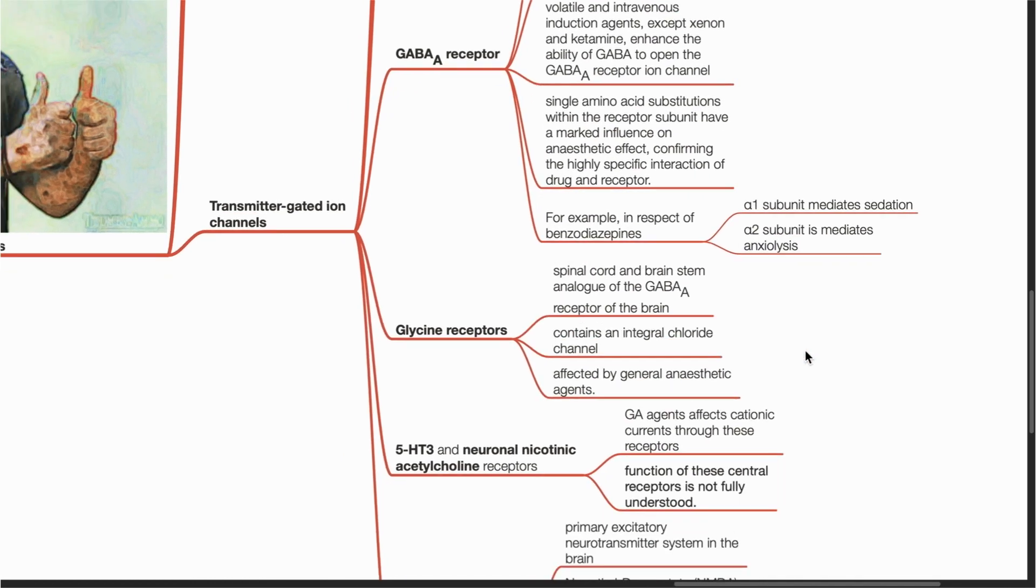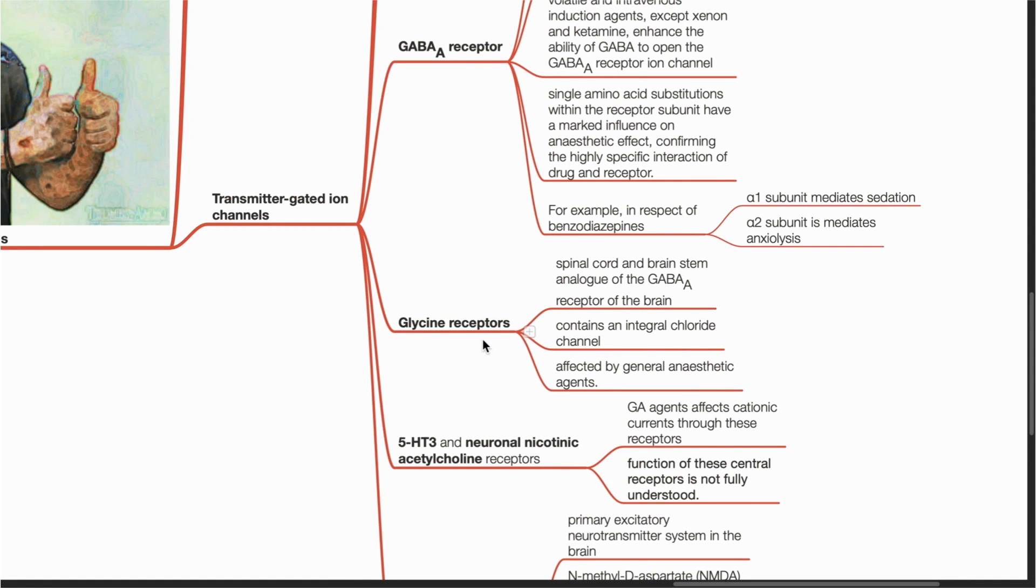We move on to the glycine receptors, which are the GABA-A receptor analog in the spinal cord and brainstem. They contain an integral chloride channel and are also affected by general anesthetic agents.